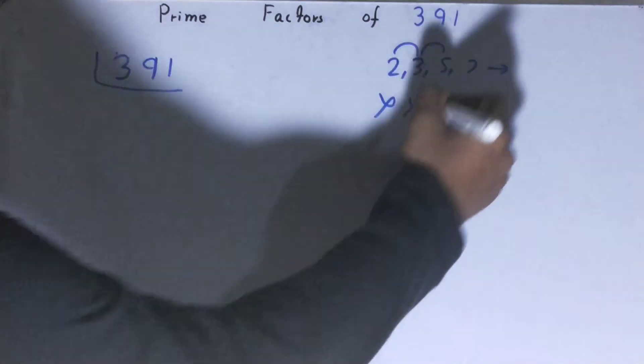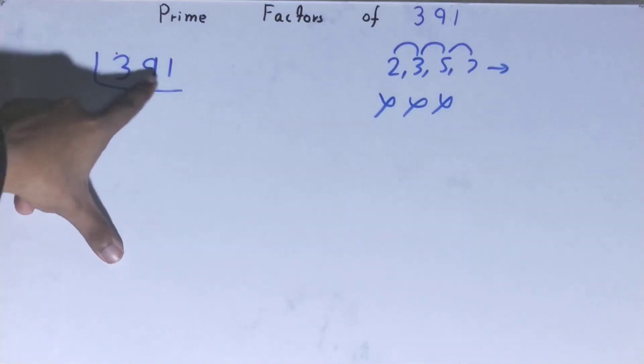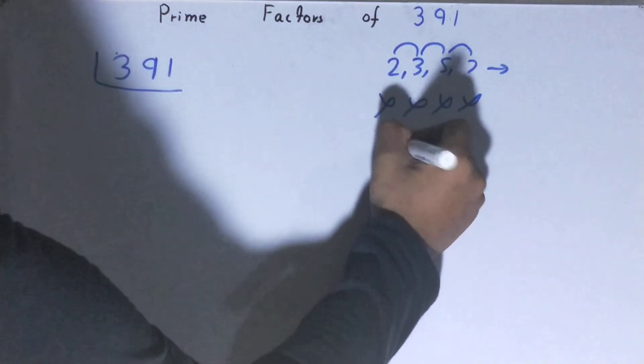So we will go to the next lowest prime number, that is 11. 11 times 3 is 33, 61... no, it is not divisible by 11 also. So we will go to the next...